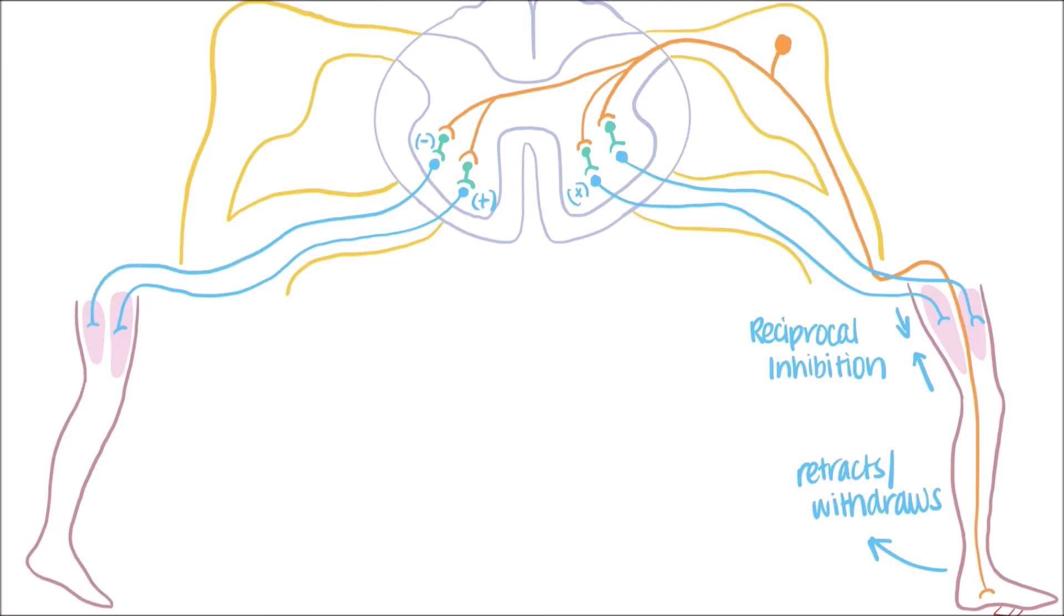This causes the extensor muscles here to contract, and the flexor muscles here to relax, which results in the extension of the leg. The excitation of these contralateral extensor muscles is called the crossed extensor reflex.